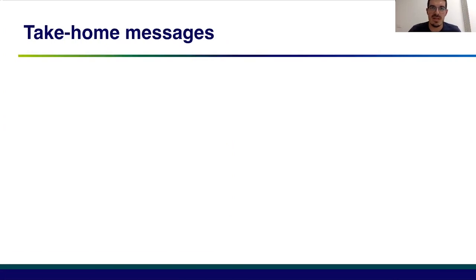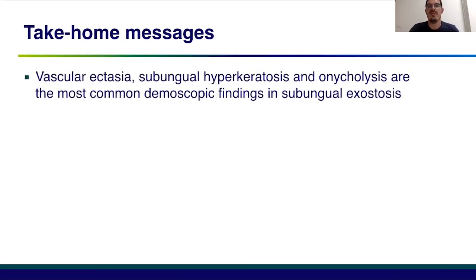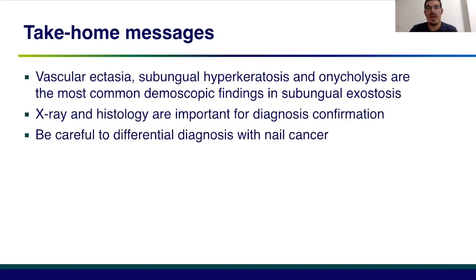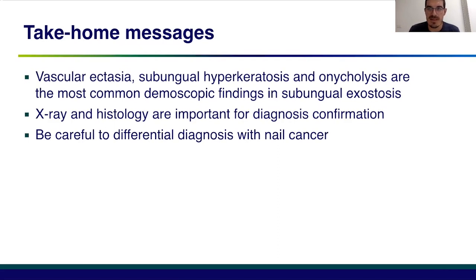So, what are the take-home messages? Vascular ectasia, subungual hyperkeratosis, and onycholysis are the most common dermoscopic findings in subungual exostosis. X-ray and histology are important for diagnosis confirmation. Last but not least, we should be very careful about differential diagnosis with nail cancers, most importantly squamous cell carcinoma and Bowen's disease.